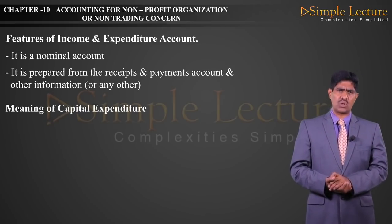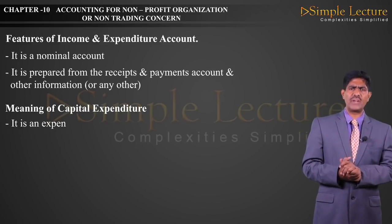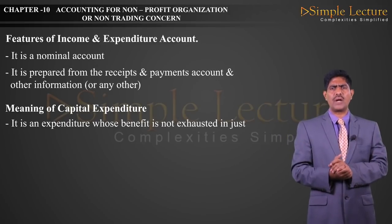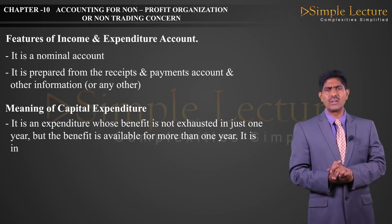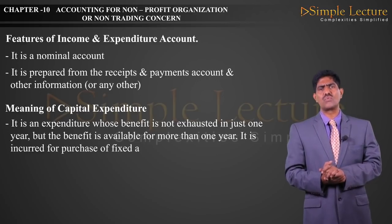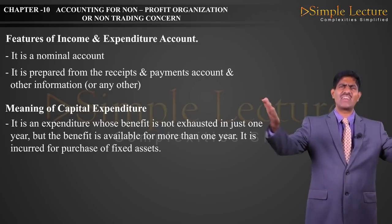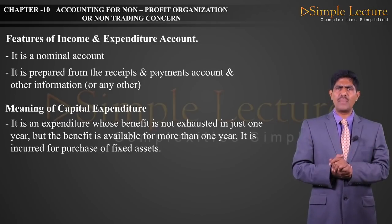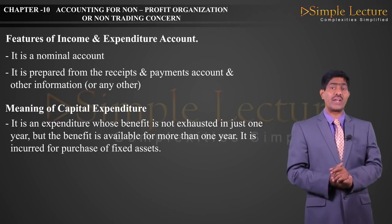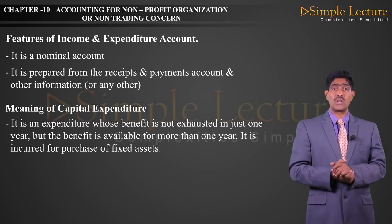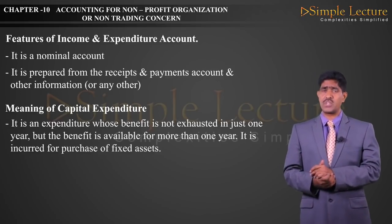Meaning of Capital Expenditure: it is an expenditure whose benefit is not exhausted in just one year, but the benefit is available for more than one year. It is incurred for the purchase of fixed assets. Capital expenditure is non-recurring in nature; there is no continuity, and the benefit does not exhaust in the same accounting year but is available for subsequent years. Examples: land purchased, X-ray machine purchased, ambulance van purchased, books purchased, furniture purchased.